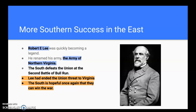Robert E. Lee is becoming a legend in the east. He renames his army the Army of Northern Virginia — you'll want to remember that name. The south defeats the Union at the Second Battle of Bull Run in 1862, on the same area of land as the First Battle of Bull Run in 1861. Lee had ended the Union threat to Virginia, and the south is once again hopeful they can win the war. Victories at the Second Bull Run and the Seven Days Battles really reinvigorate the confidence of the south.